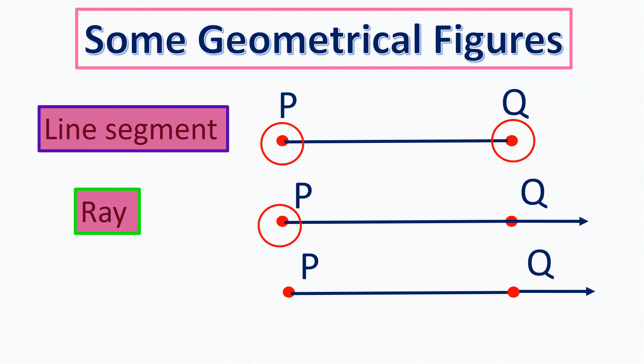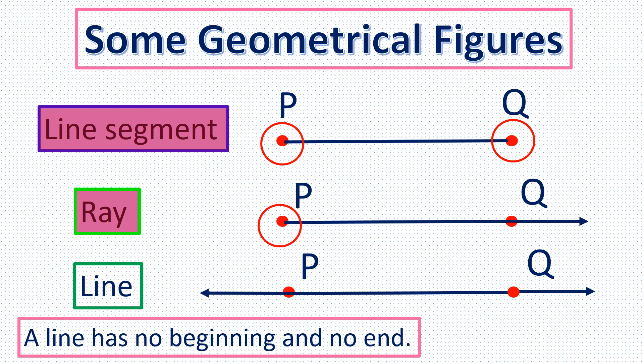And if we extend this endpoint of a ray, we now have a line. A line has no beginning and no end. Just like a line segment, you can go both ways in naming a line. In this example, this can be named as line PQ or line QP with a little symbol of the line above the letters.